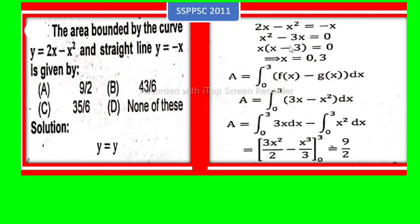So take x common: x times (x minus 3) equals 0. x equals 0 and x minus 3 equals 0, so x equals 3. So the integral from 0 to 3 of f(x) minus g(x) dx.